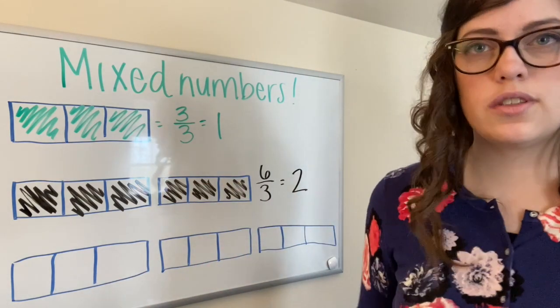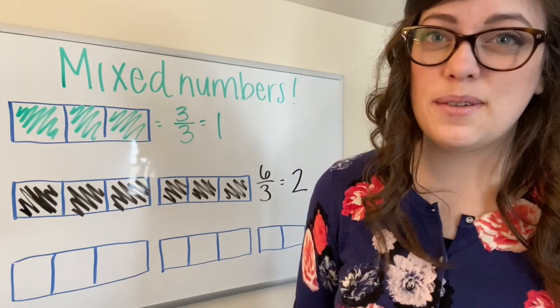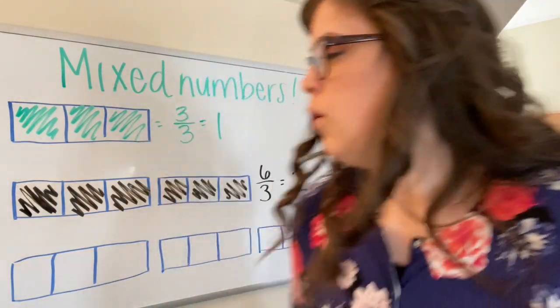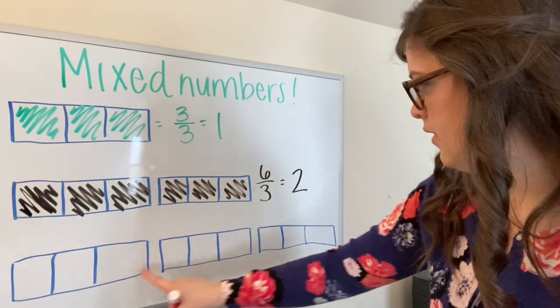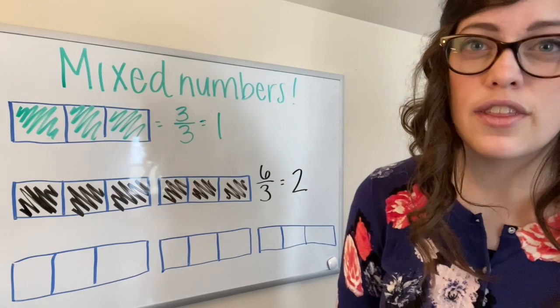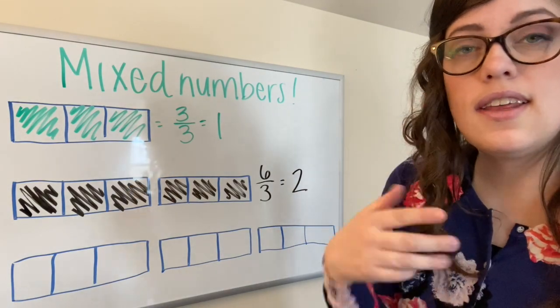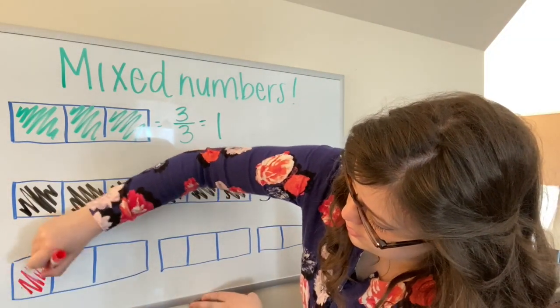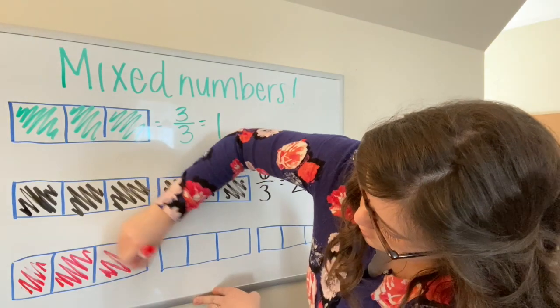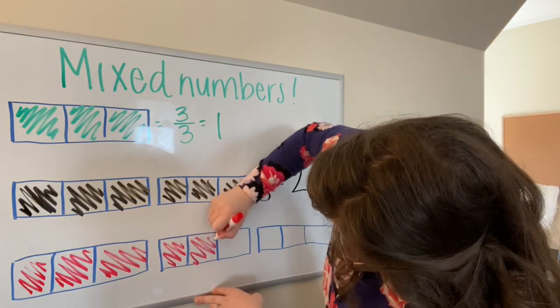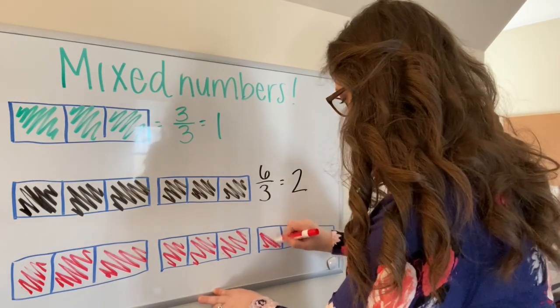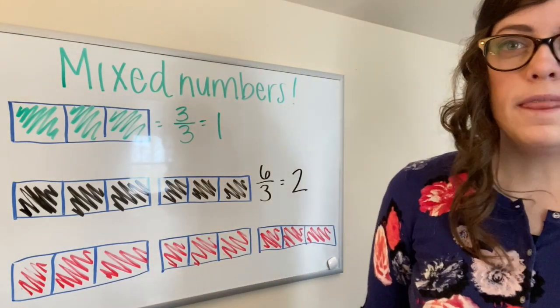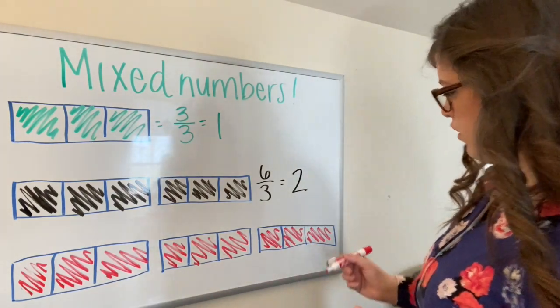So I would end up with a total of two. Now you might see where I'm going with this, but let's take a look at the final example on the board. What if I color in all nine thirds? Think about what you think the answer will be while I color them in. All right. So I've colored in nine thirds.